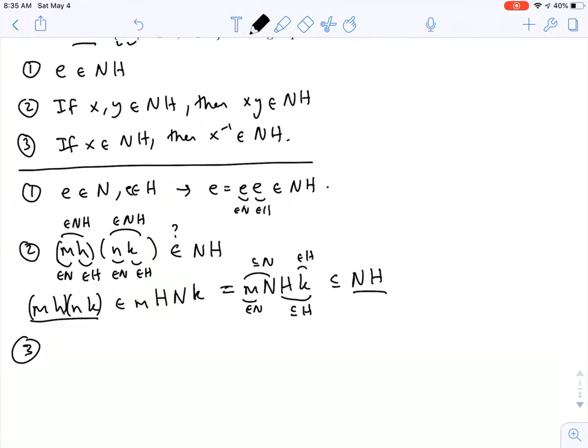All right, third step. We want to show that if you have an element in NH, then its inverse is in NH. So let's say I have some n times h in NH, where my n is in N, and my h is in H. Let's invert it.